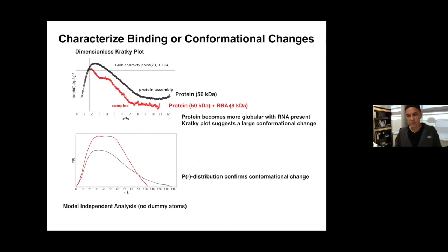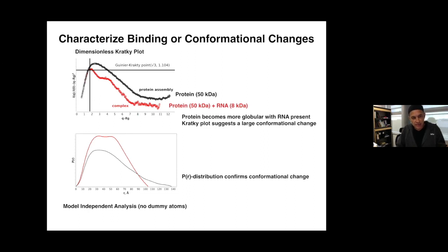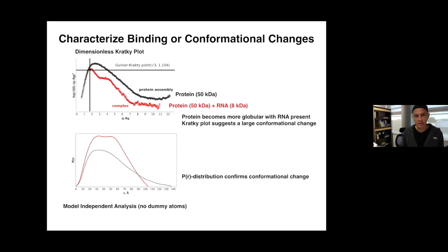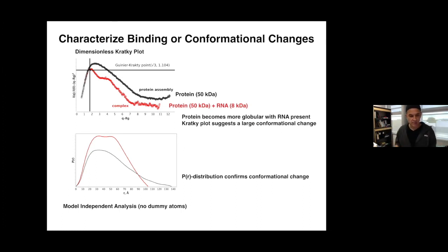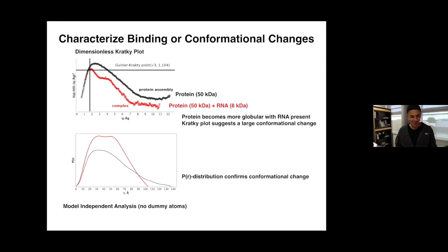Here's a great example: an RNA-binding protein where the RNA is roughly 8 kDa. In the absence of RNA, the dimensionless Kratky plot suggests the protein is partially unfolded or very flexible. When you add the RNA, it collapses into a globular compact particle. There's no modeling here — just looking at the data this way allows you to make a good assessment. This should also tell you that if you have data looking like the unfolded case, you probably shouldn't do ab initio volumetric modeling.